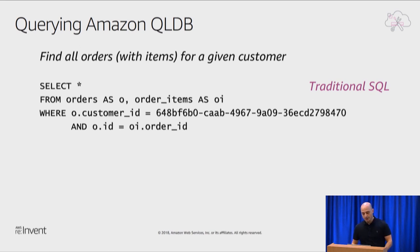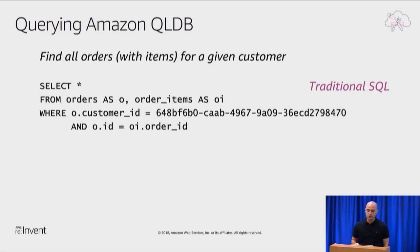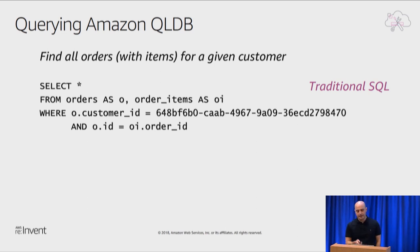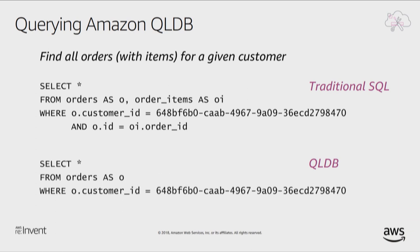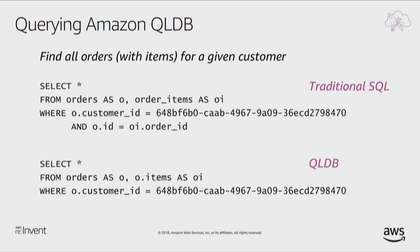Another example to cement that concept: a traditional join between orders and order items, filtering on order ID for both tables and a customer ID. The QLDB equivalent works on one object — the orders document. You don't need the where clause filter on the ID since it's the same document; you're only filtering on the customer ID. That's the only thing you need to reflect the same SQL result.